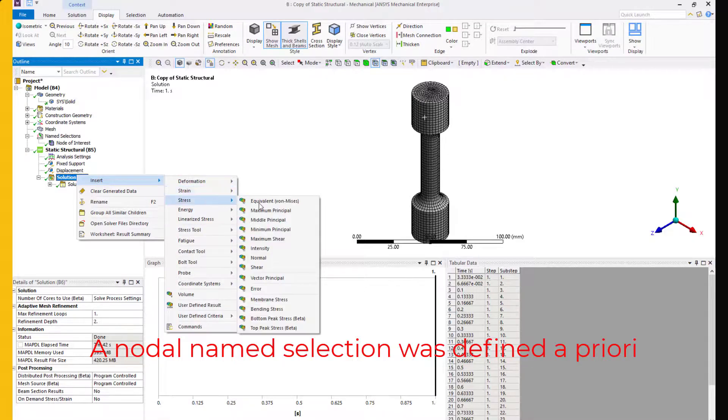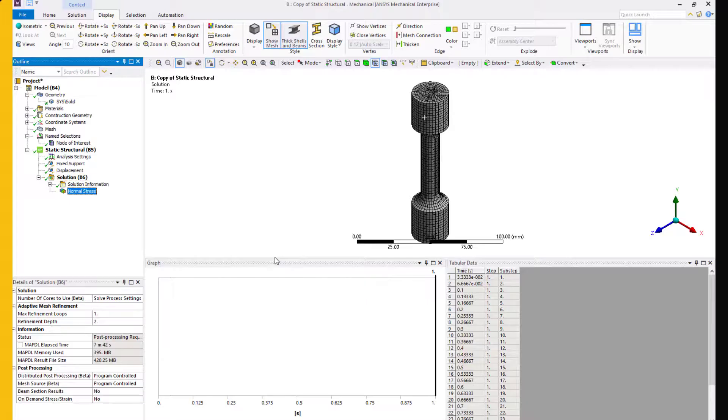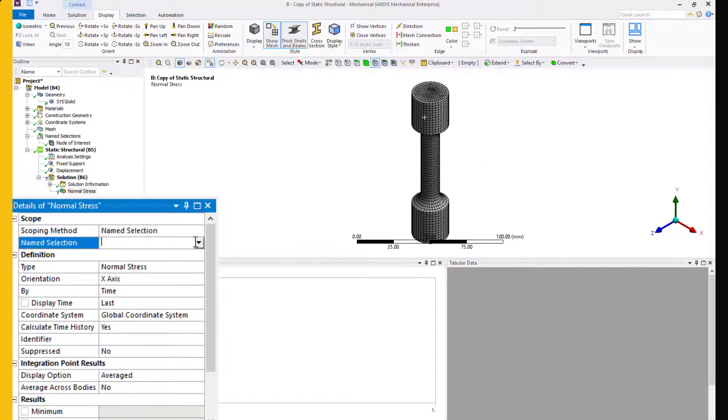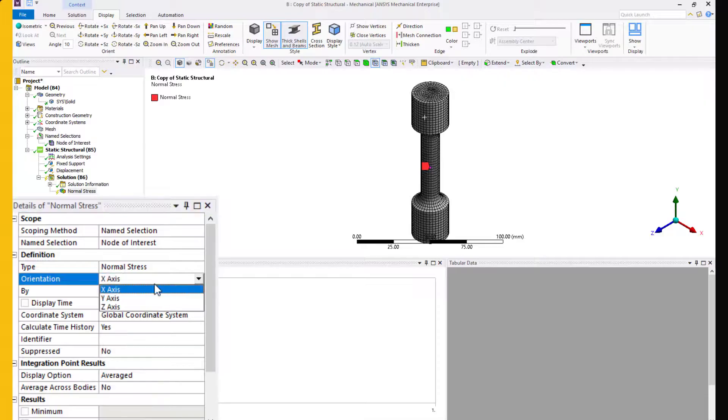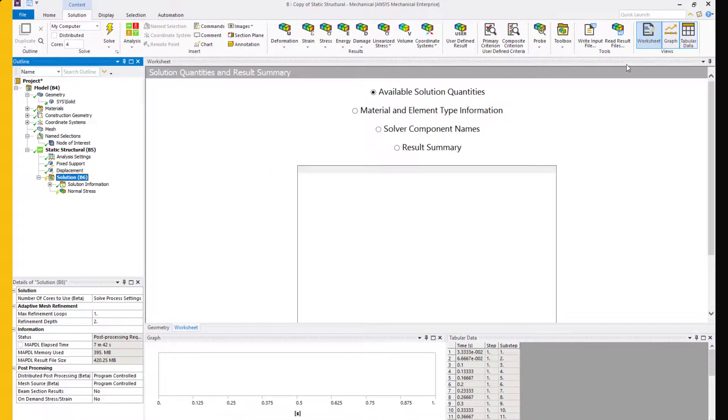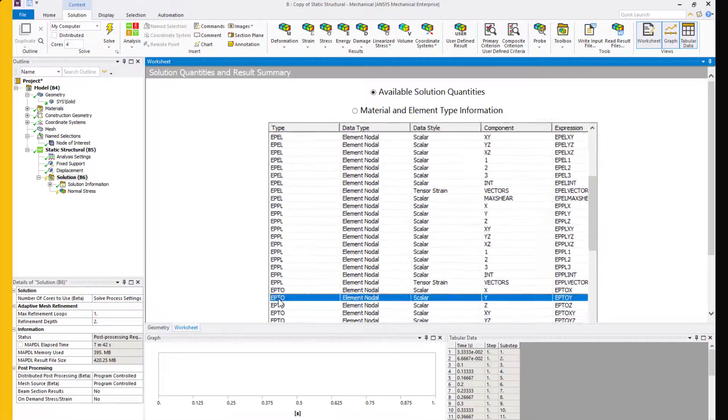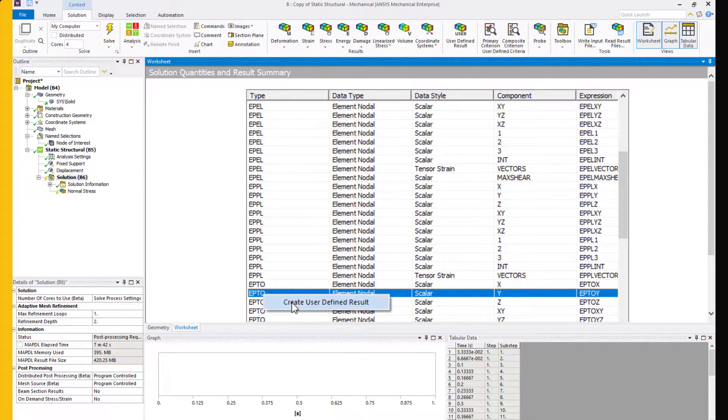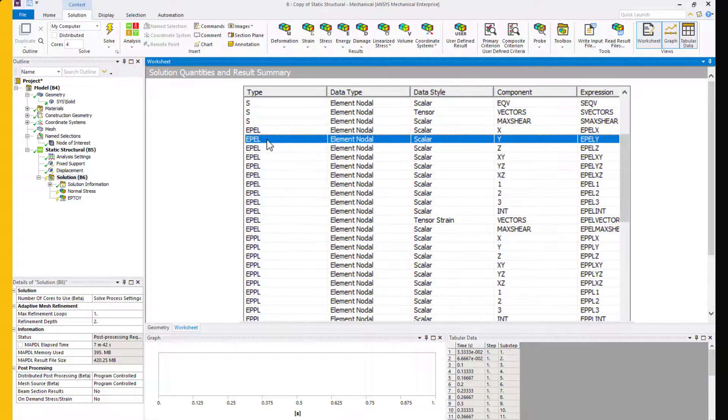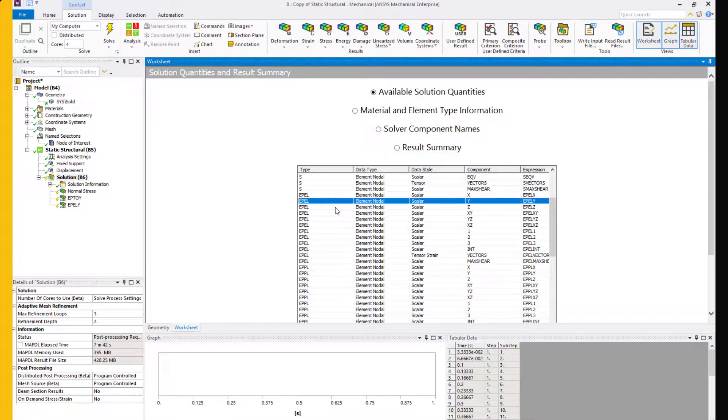Let's plot the normal stress in Y and scope it to the name selection. Next, let's plot the total normal strain in Y direction. To do this, we'll use a user-defined result to plot. You can review the available options when you are on solution and change to worksheet view. We are interested in plotting the total plastic strain in Y direction. Select it, right-click, and insert a user-defined result.